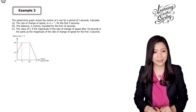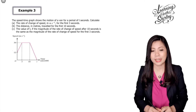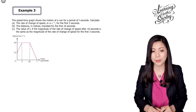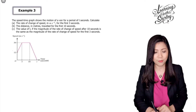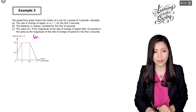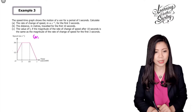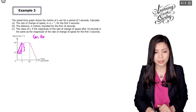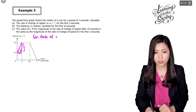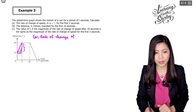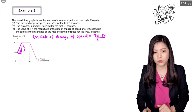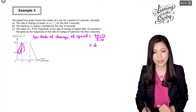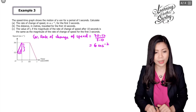Let's look at example 3. The speed-time graph shows the motion of a van for a period of 3 seconds. Calculate A: the rate of change of speed in m/s² for the first 3 seconds. To find the rate of change of speed, we find the gradient of this line using the right-angle triangle: (30 minus 12) over (3 minus 0) equals 18 divided by 3, which is 6 meters per second squared.